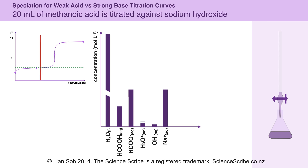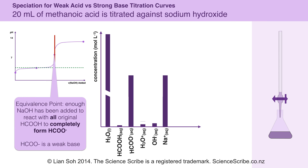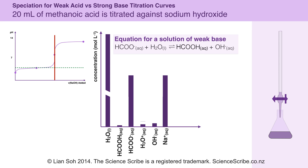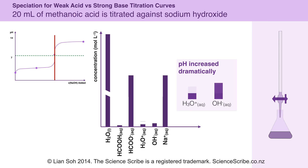If we continue adding more sodium hydroxide, we eventually reach a point called equivalence point. At equivalence point, I've added enough NaOH to completely react with all of my original acid. However, on my speciation graph, you can see that I still have a very small bar present for my methanoic acid. At equivalence point, there's so much of the weak base methanoate ions that there's actually an equilibrium between my weak base and the water in the flask, and that equilibrium produces a small amount of methanoic acid. From this equation, hydroxide ions are also produced, which means that at equivalence point, I have more hydroxide ions than hydronium ions. That's why at equivalence point for a weak acid versus strong base titration, the pH is not 7.